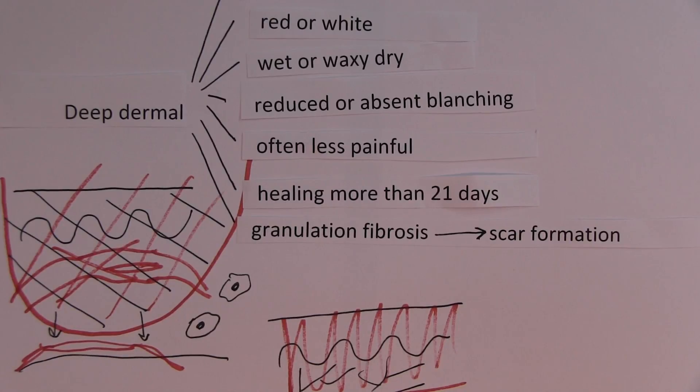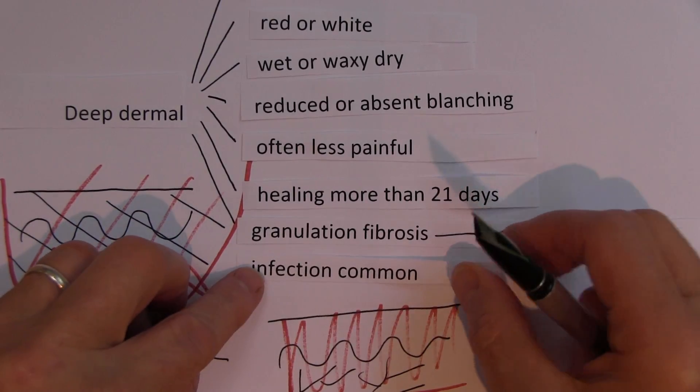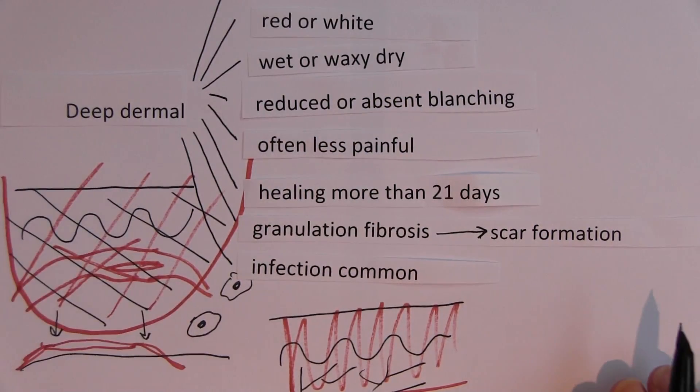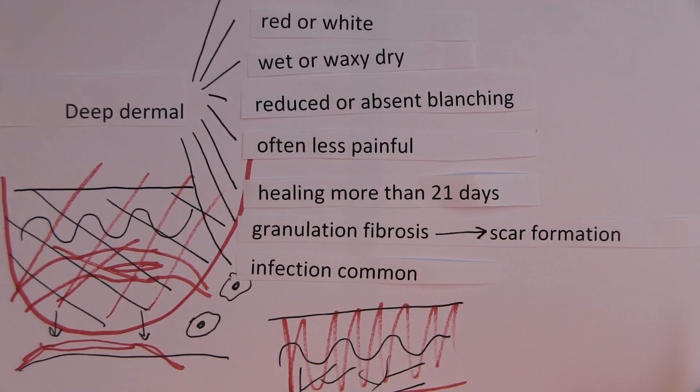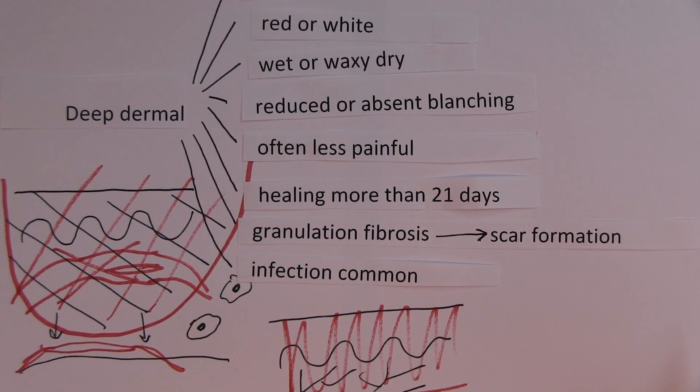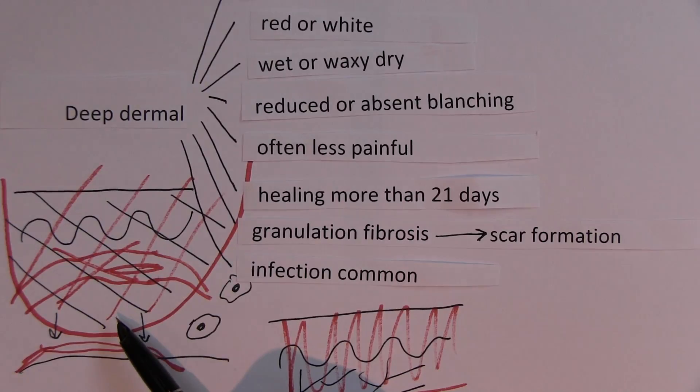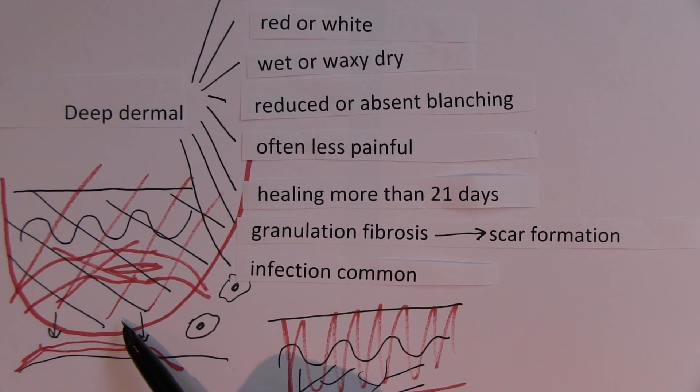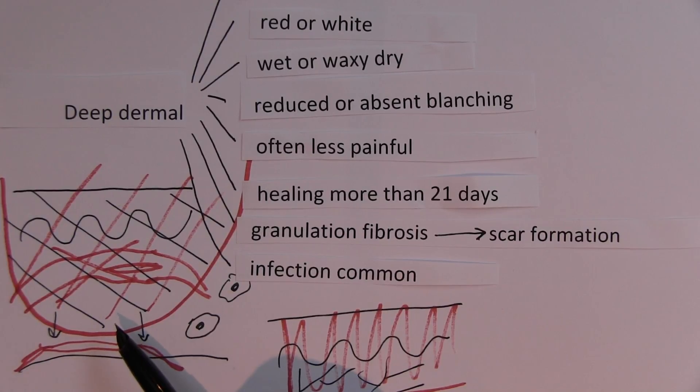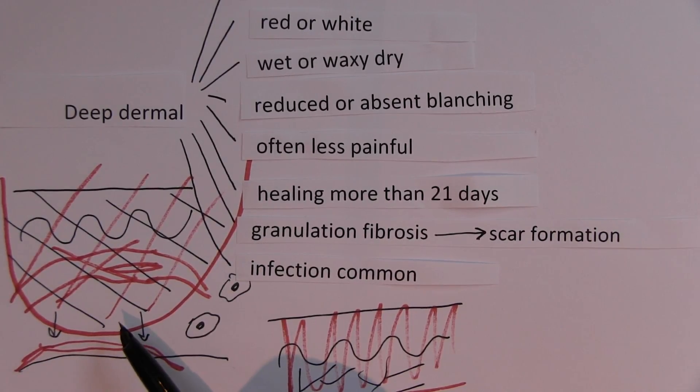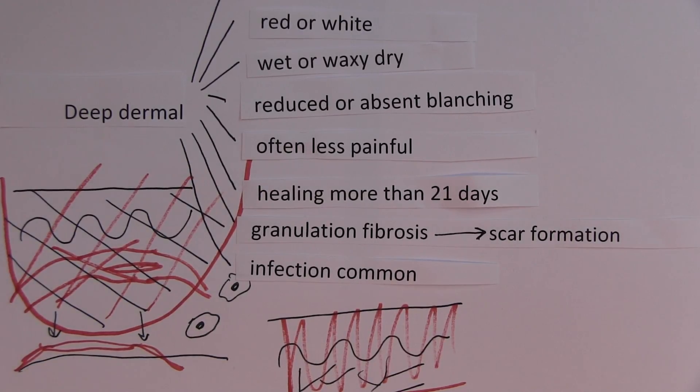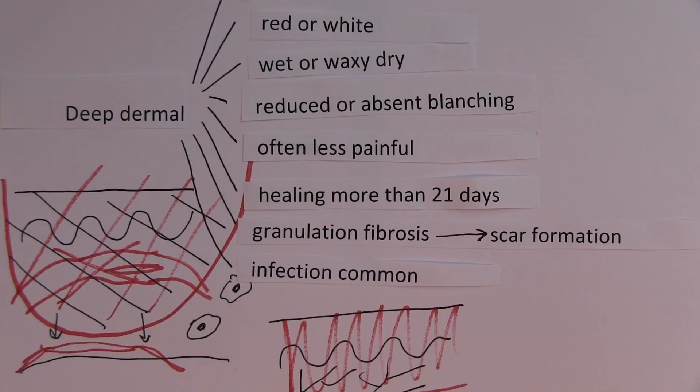And as in all burns, as we've said, infection is common. But infection is particularly a problem with deep dermal partial thickness injuries. These burns are likely to get infected. That's going to further delay wound healing, can actually increase the size of the wound, and make no mistake, there is a risk of sepsis. Systemic sepsis is a risk with burn injuries, and people can die from it, of course.